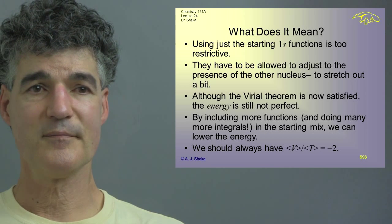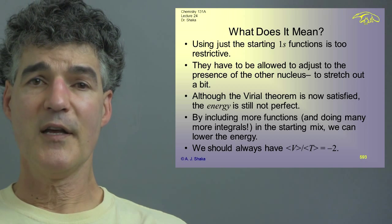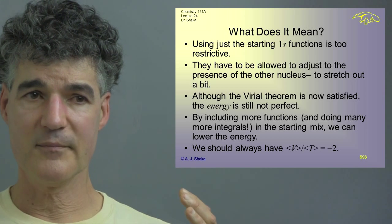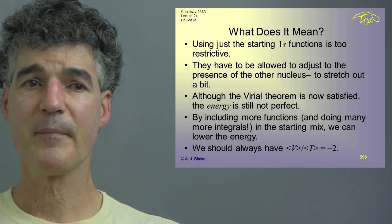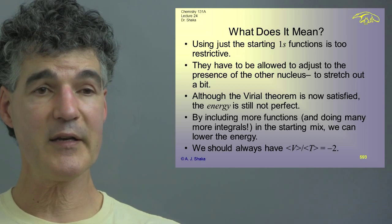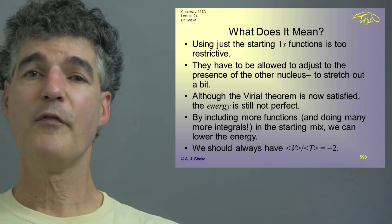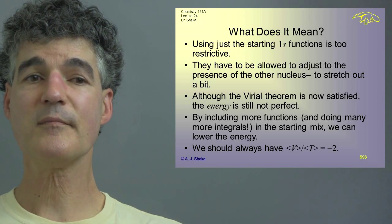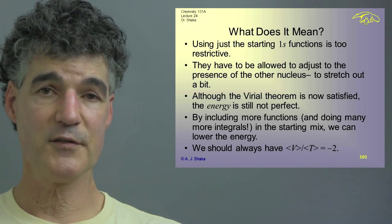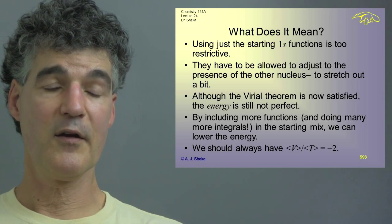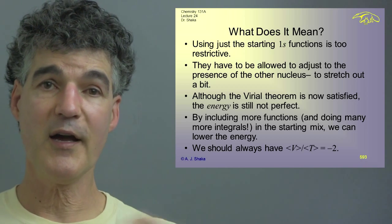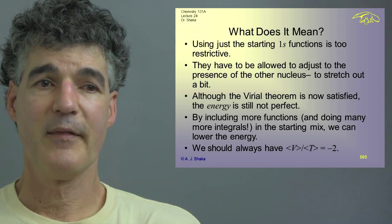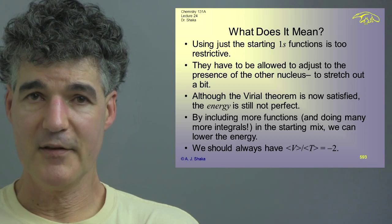That doesn't mean it's the correct energy — it just means it's not obviously wrong. There are many solutions that meet the Virial criterion with different quality levels. Starting with just the 1s wave functions was too restrictive; they had to be allowed to stretch to incorporate the presence of the other nucleus. The energy is much better, it's still not perfect, but at least the Virial Theorem is satisfied. If we want to do better, we know the prescription: include other functions in the basis.